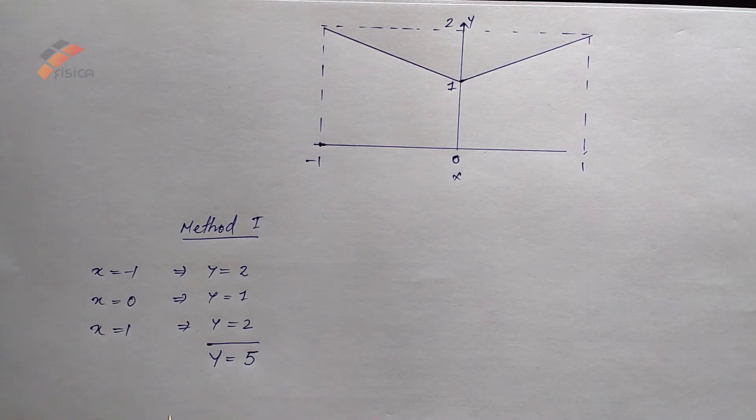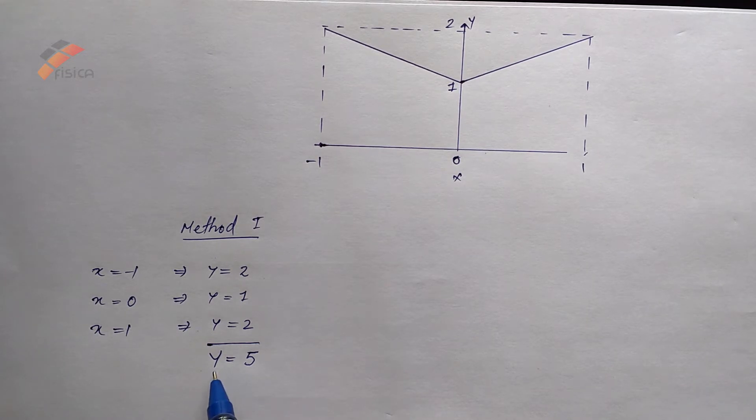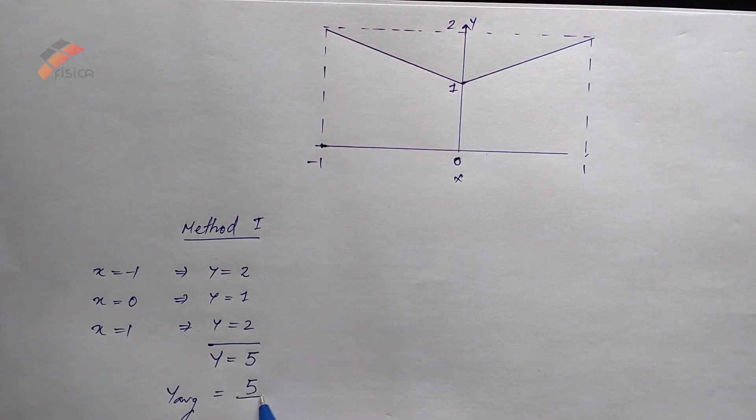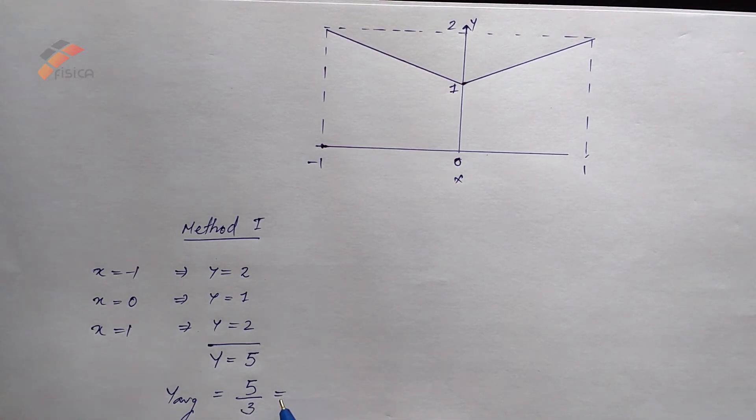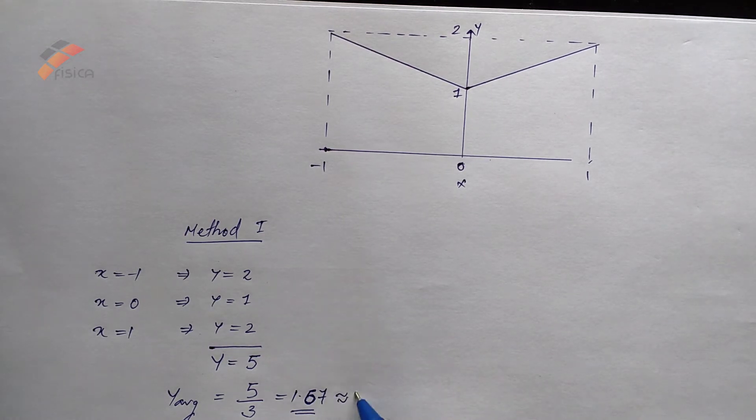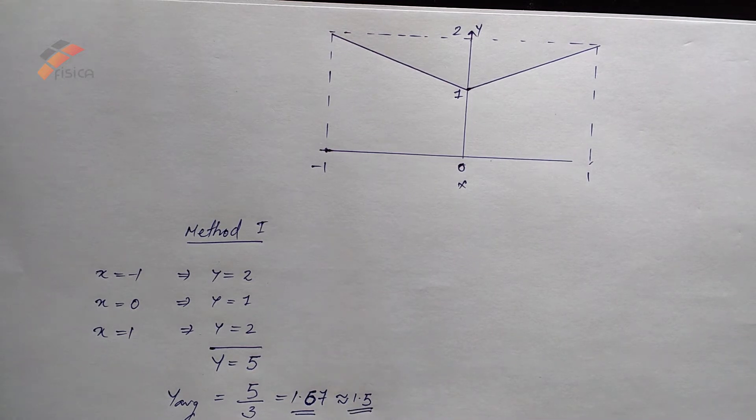So, to find the average, we have to divide y by number of points. That is y average equal to 5 by 3 equal to 1.67, which is approximately equal to 1.5.